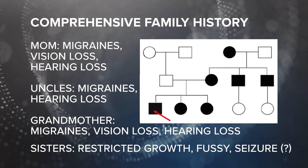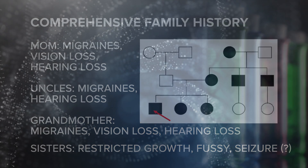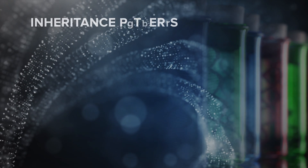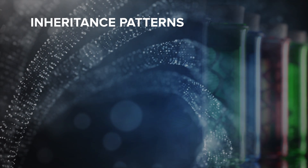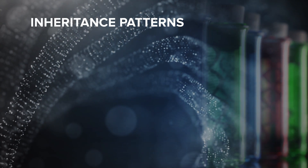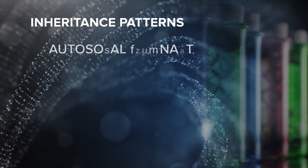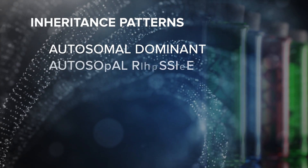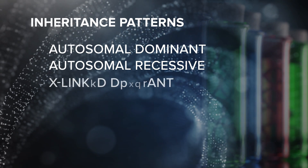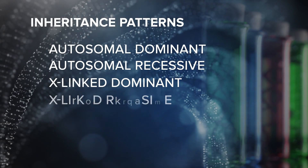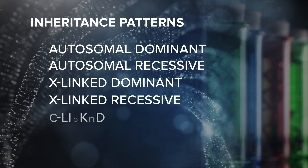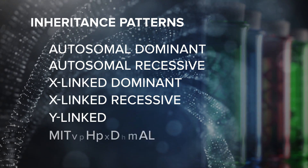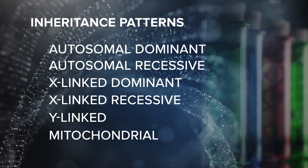You recall that pedigrees in which two or more relatives have the same or related disorders is a red flag for a genetic link, as is growth restriction. You draw out a pedigree denoting all relatives who have complained of migraines, including the sisters who are fussy but too young to know whether it could be due to a migraine. As a reminder, some of the more common inheritance patterns include autosomal dominant, autosomal recessive, X-linked dominant, X-linked recessive, Y-linked, and mitochondrial.